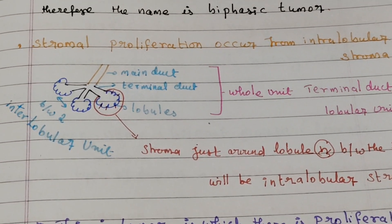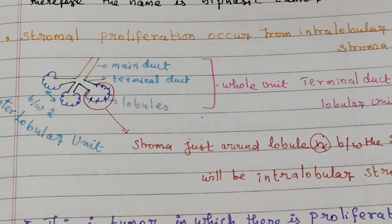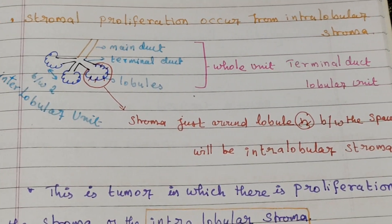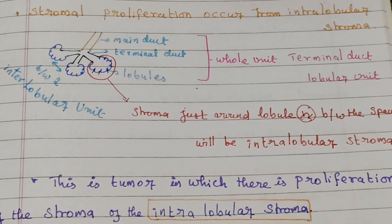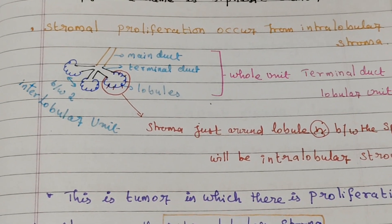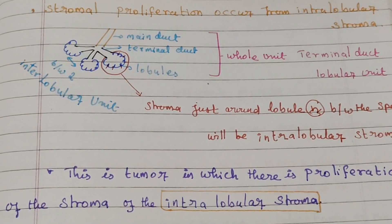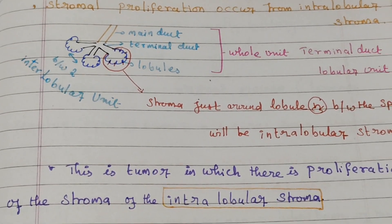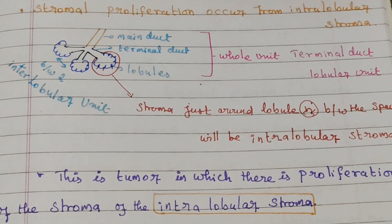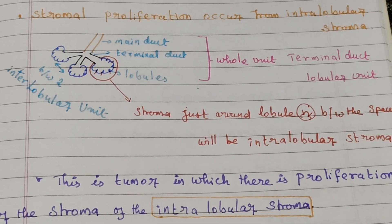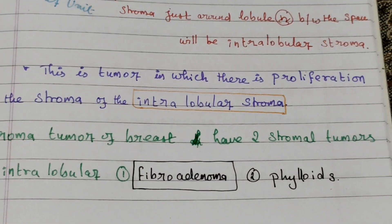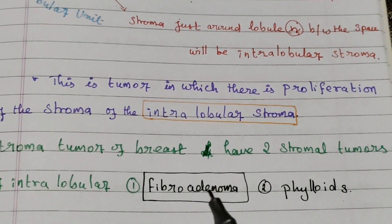So the intralobular stroma is the stroma just around and within the lobule space. This is the tumor in which there is proliferation of the intralobular stroma. When we talk about stromal tumors of the breast, we have two types of intralobular stromal tumors, and here we are discussing fibroadenoma.